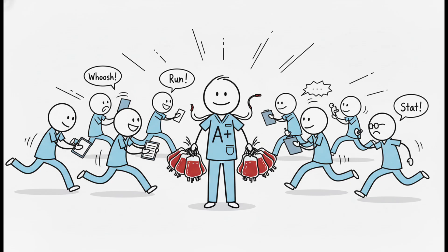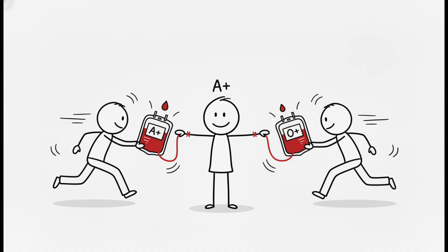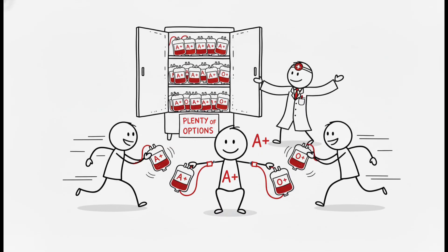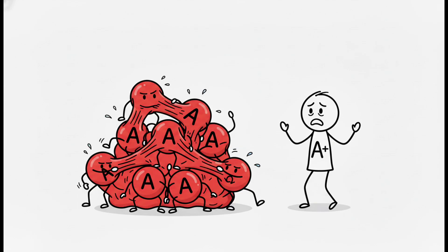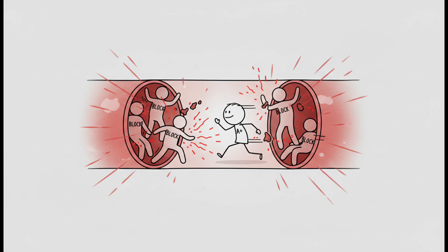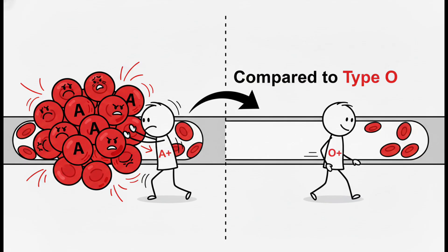Medically, A positive is a workhorse. You can receive blood from A and O positive donors, giving hospitals plenty of options. But the builder's blood has a dark side. That sticky A antigen makes your blood cells clump together more easily, significantly raising your risk of blood clots, stroke, and heart disease compared to type O.